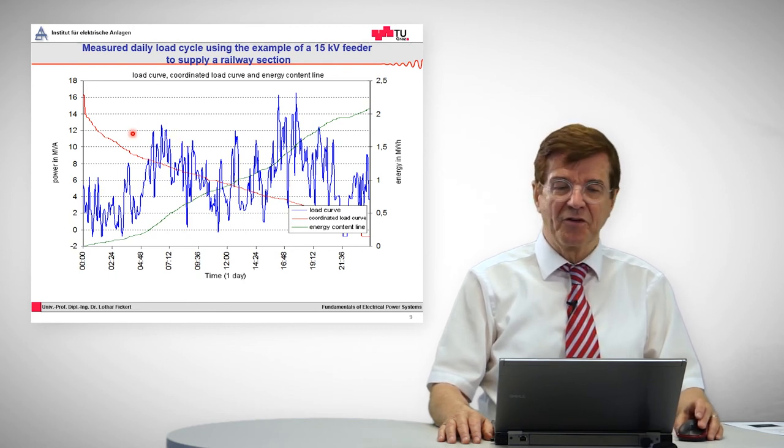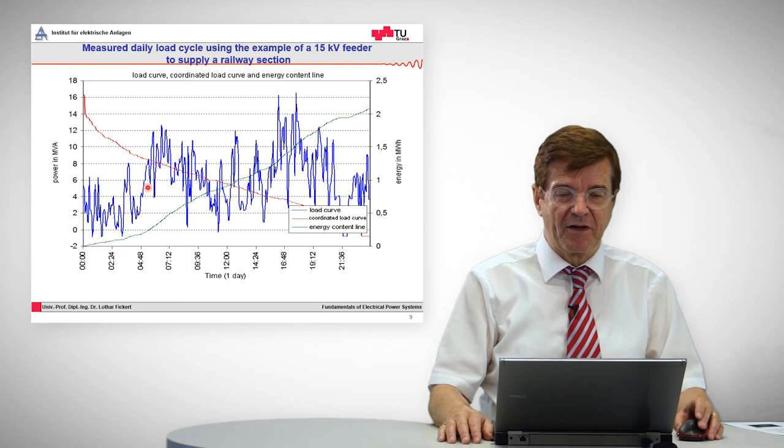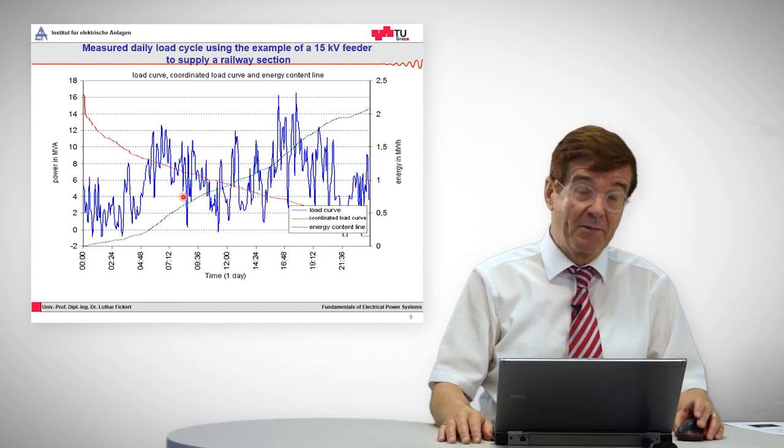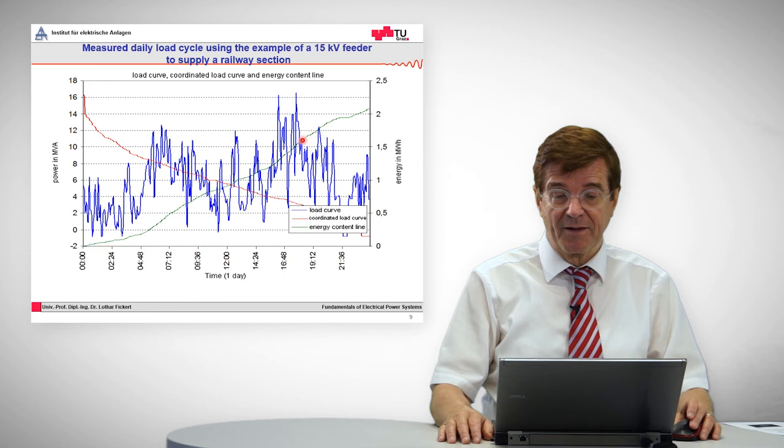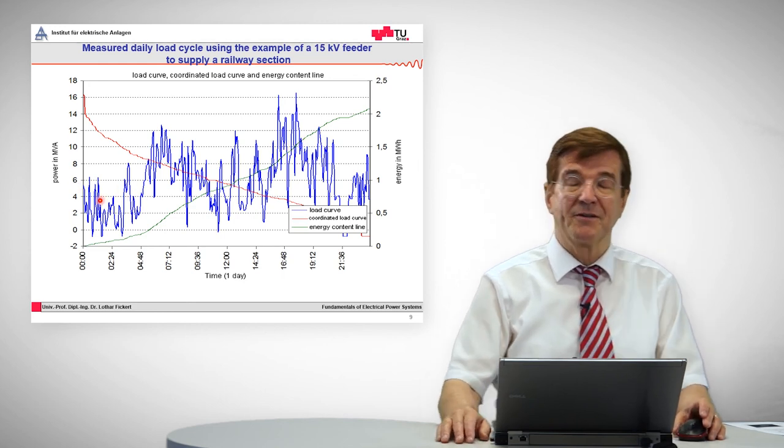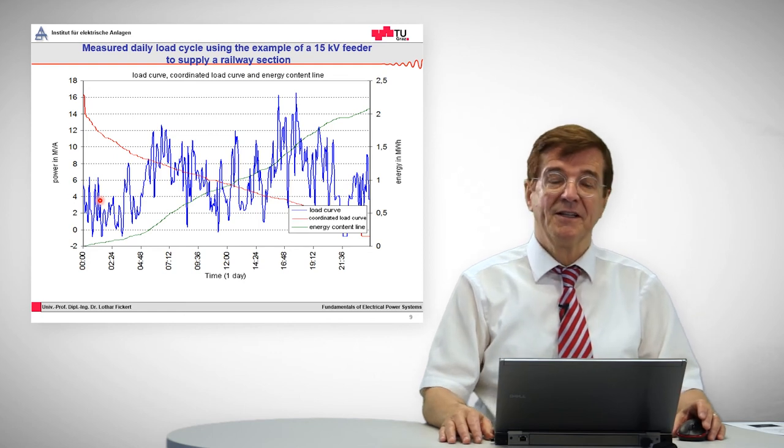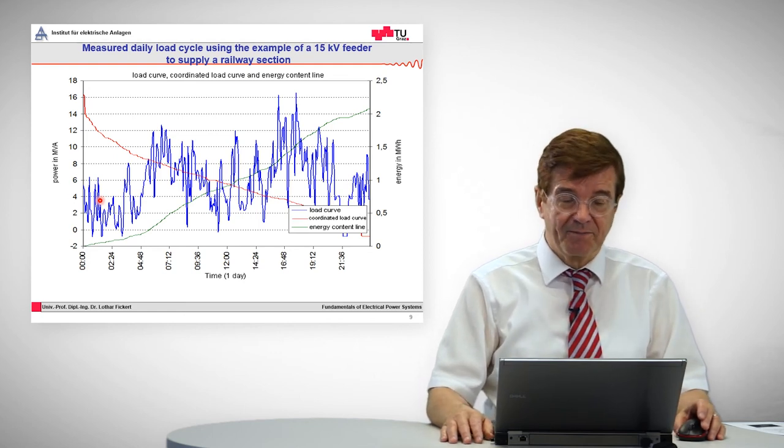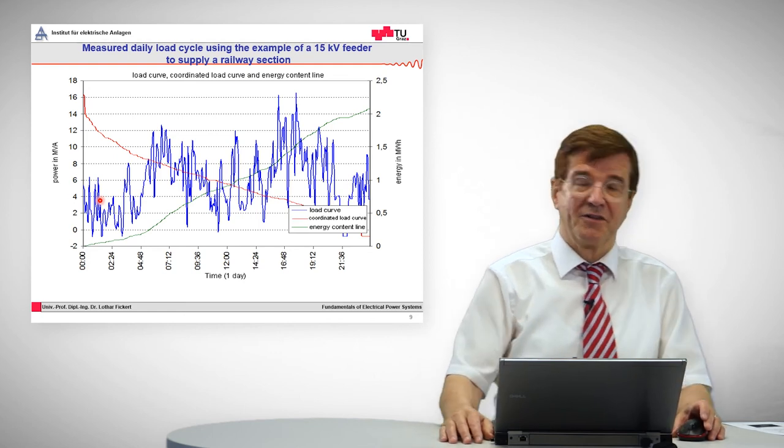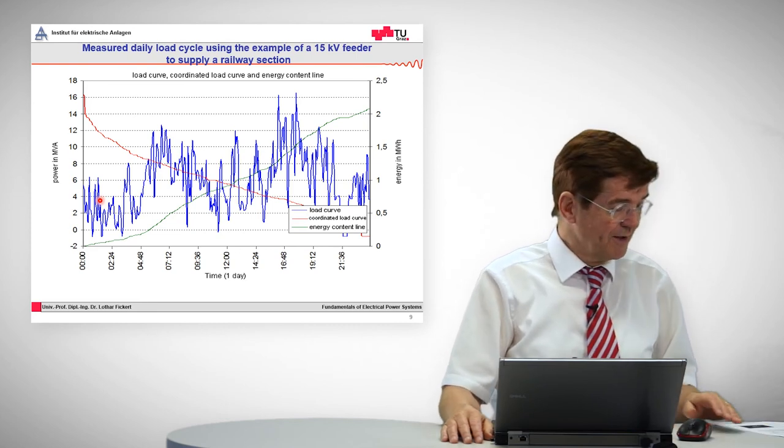And you see, again, this typical behavior of load curves. You have a lot of power consumption in the morning when people go to work, the commuters, in the evening when they come back. And the question is what happens during the night time, where normally there is no personal traffic. This is the electrical consumption of electrical power of the trains, of the load trains.